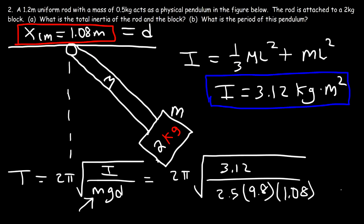Go ahead and type that in: 3.12 divided by 2.5, divided by 9.8, then divided by 1.08. That gives a small number, about 0.1179. Take the square root of that result and multiply by 2π. You should get a period of 2.16 seconds — that's the answer for this problem.